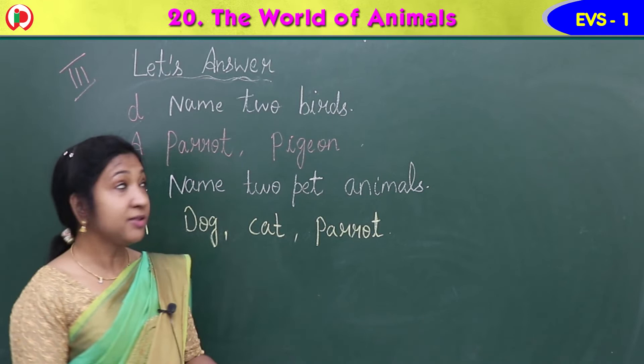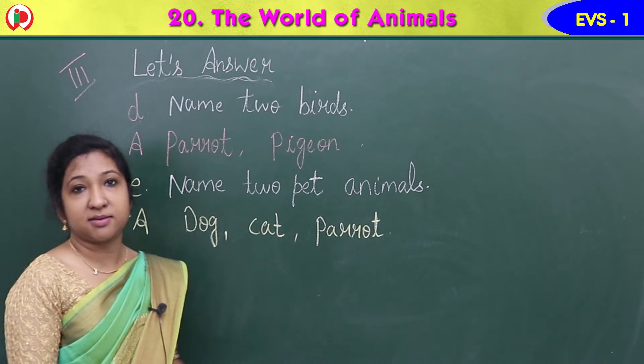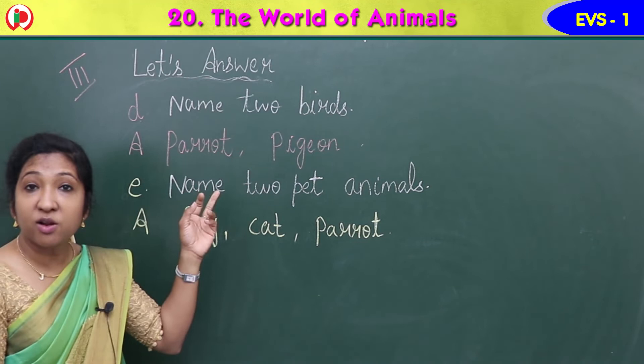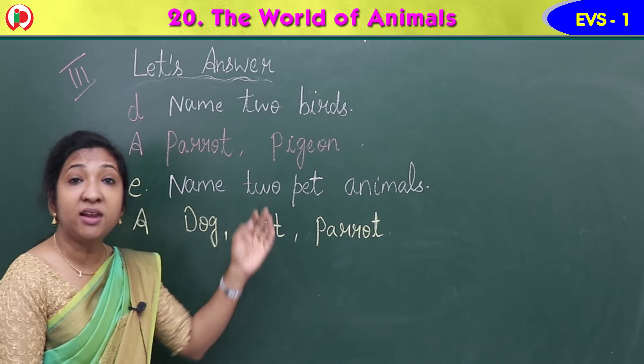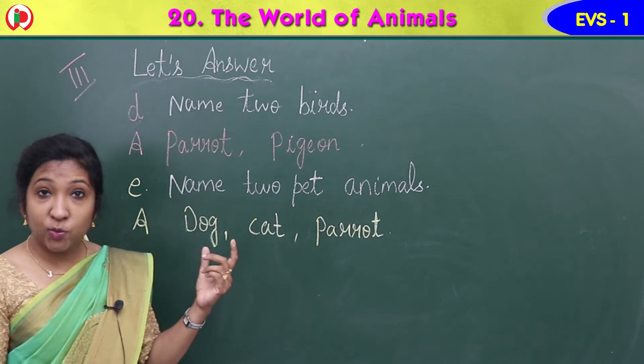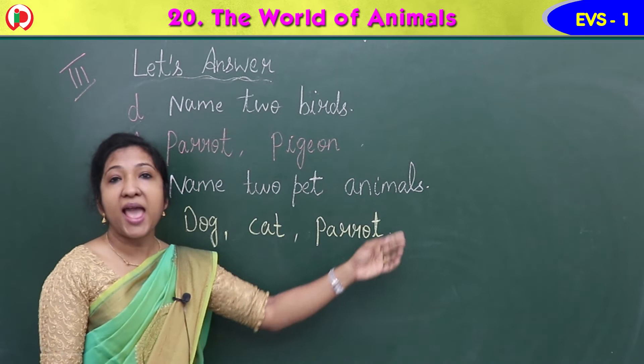Our next question is Question D: name two birds. Answer: parrot, P-A-R-R-O-T, and pigeon, P-I-G-E-O-N. Any two birds — parrot and pigeon.